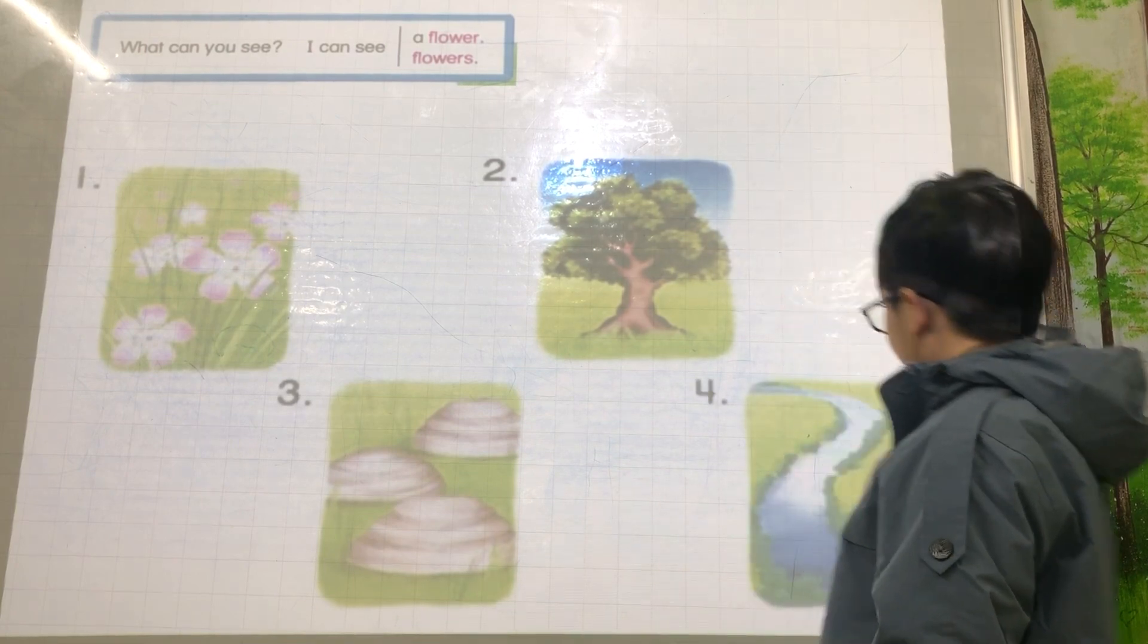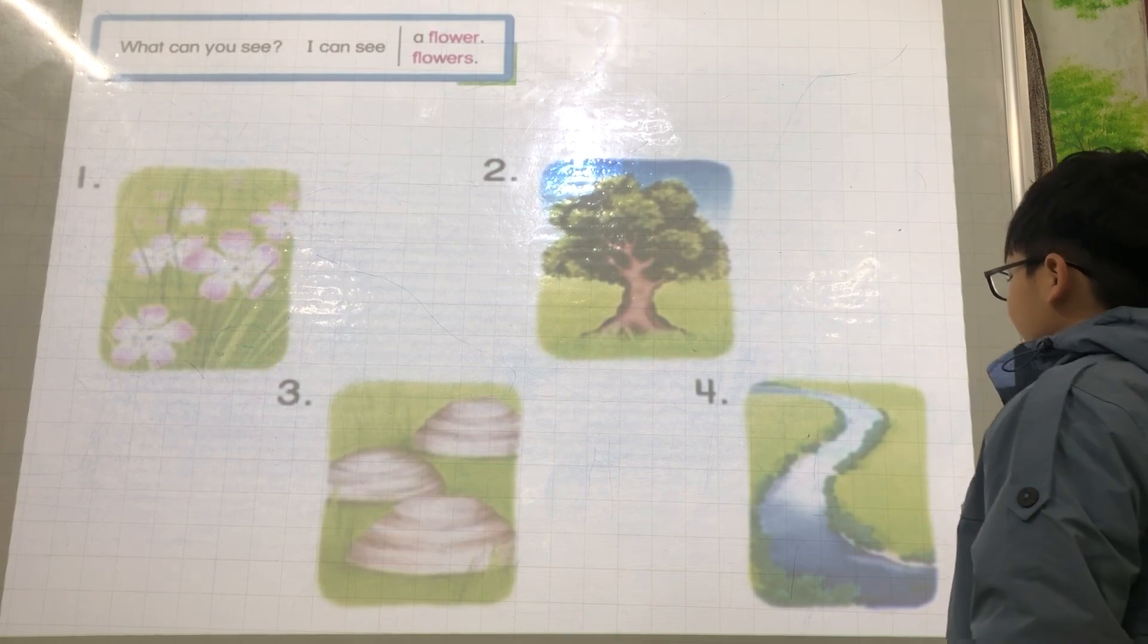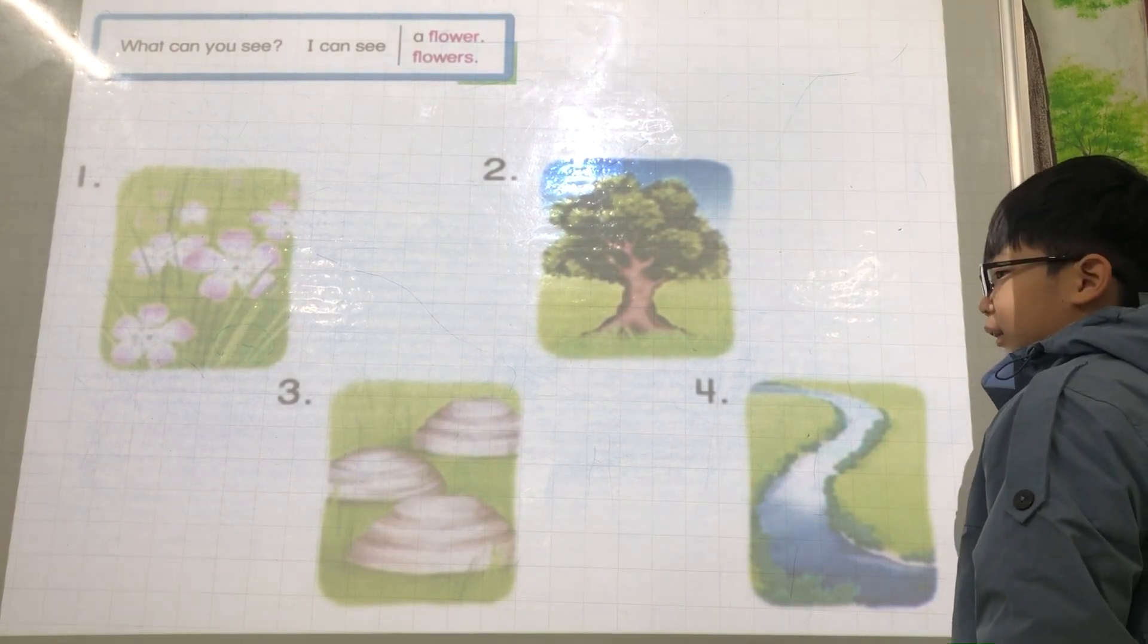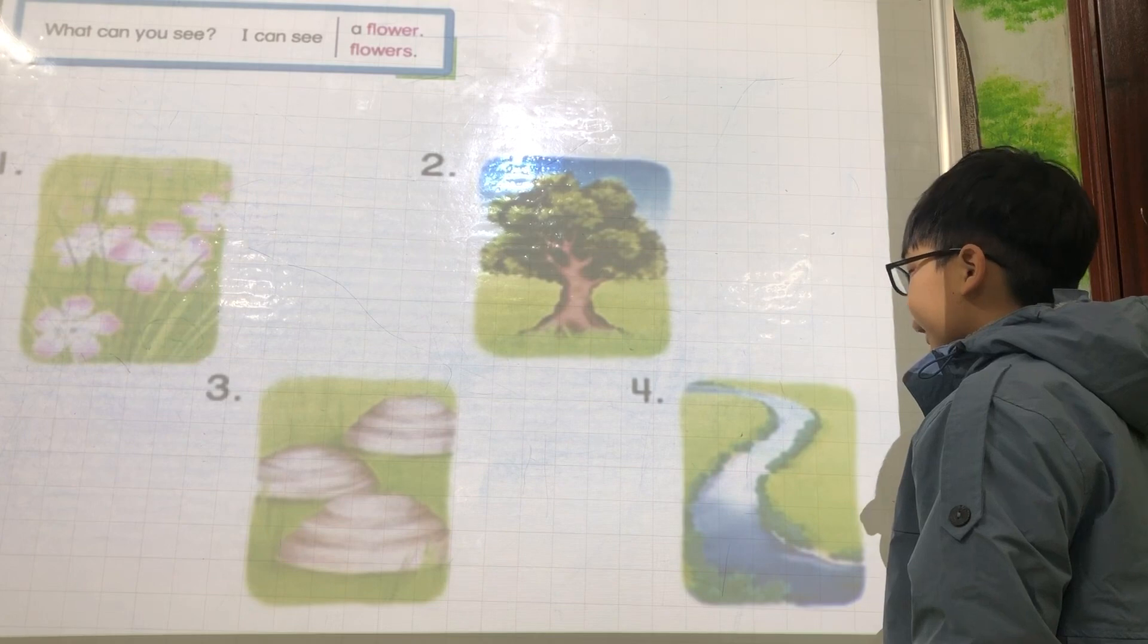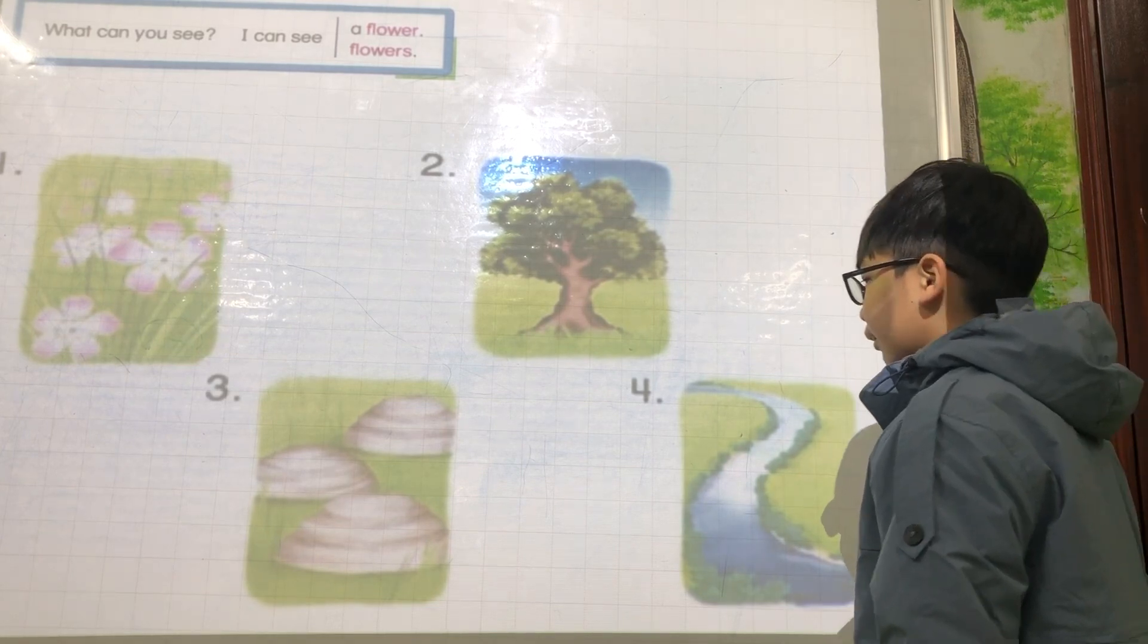What can you see? I can see a lake. No. I can see a river. Okay, ask your turn.